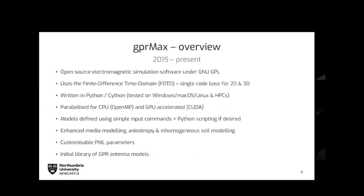In 2015, I was involved in a project with DSTL that allowed us to completely rewrite GPR Max from scratch. This was the point we decided to make it open source using a GNU GPL license. We also decided that maintaining two separate code bases was not smart going forward, so we integrated the 2D and 3D solvers together. Most importantly, we wanted to move to a more modern language, so we decided to move predominantly to Python.